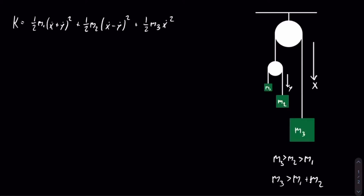Now we need to find the potential energy, which is only in the form of gravitational potential energy. I will be measuring the gravitational potential energy from the ceiling. For m1, I'll write negative m1g, and then I need to add the height. Looking at the x coordinate, m1 is moving in the opposite direction as shown on screen, so that has to be negative. The y coordinate is also moving in the opposite direction, so the height is going to be negative x minus y.